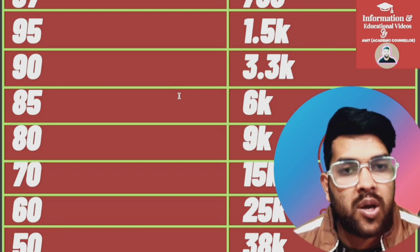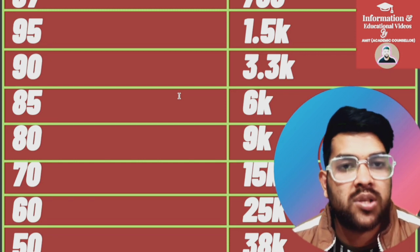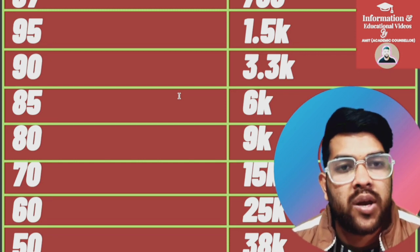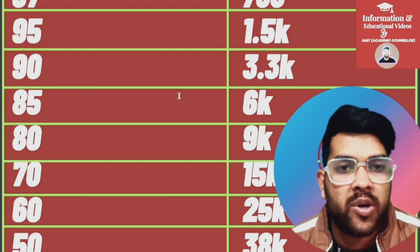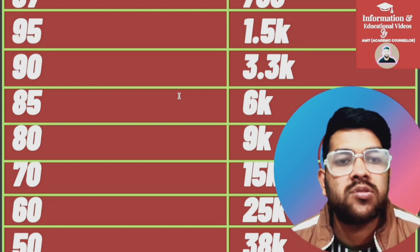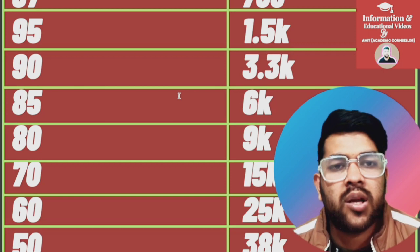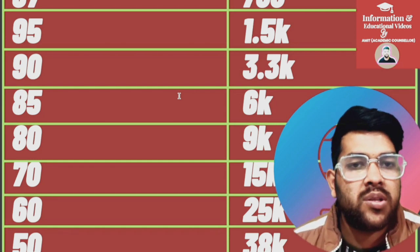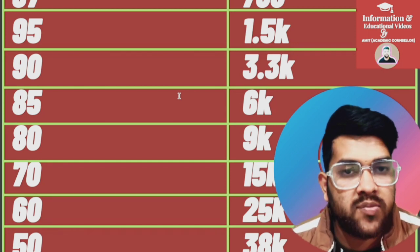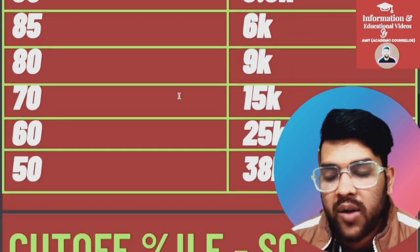The total number of SC category aspirants every year — the unique number after combining both sessions — is around 80,000, sometimes 83,000. It can also be around 76,000 to 78,000.